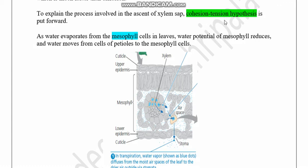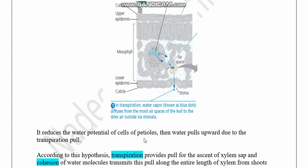The cohesion-tension hypothesis is used to explain the ascent of xylem sap. During daytime, due to temperature, water evaporates from mesophyll cells and is lost through transpiration. As the water amount in mesophyll cells decreases, the water potential of mesophyll cells decreases, causing water to move from petiole cells to mesophyll cells according to the water potential gradient. This reduces the water amount and water potential of the petiole cells.